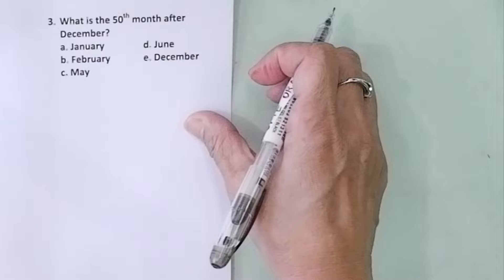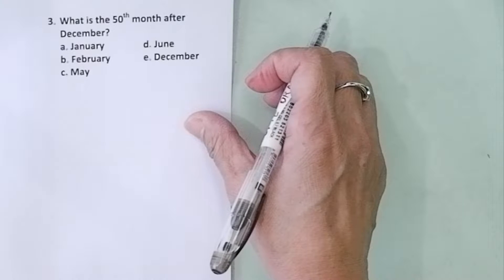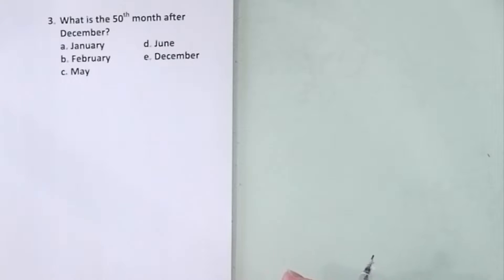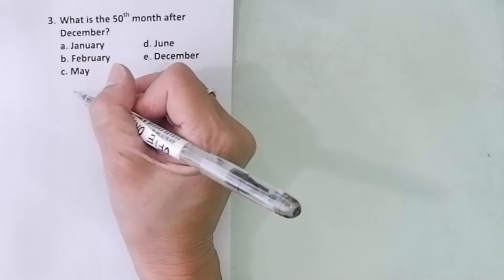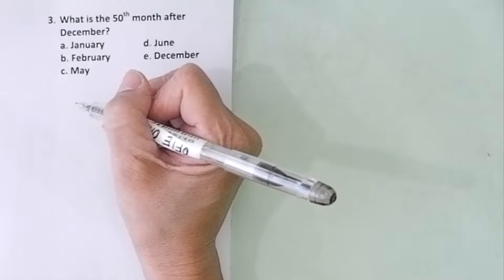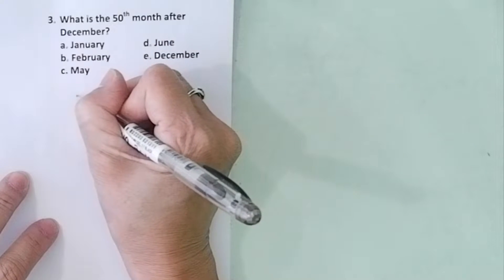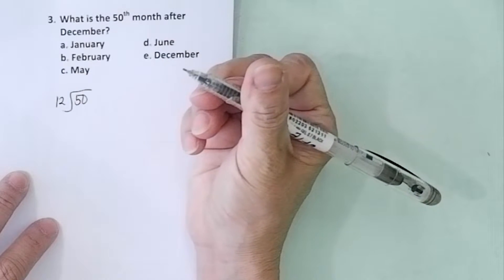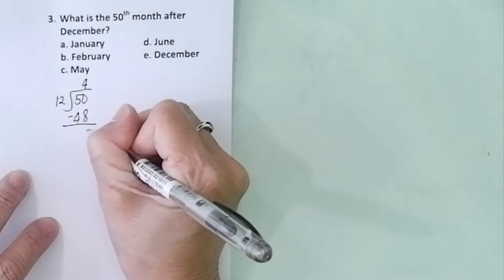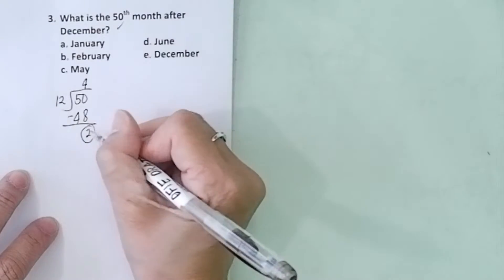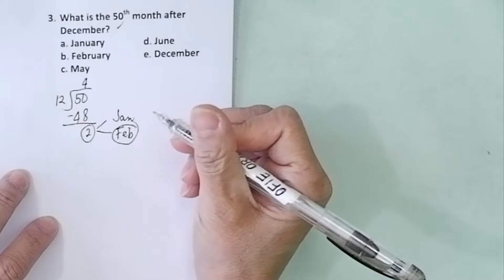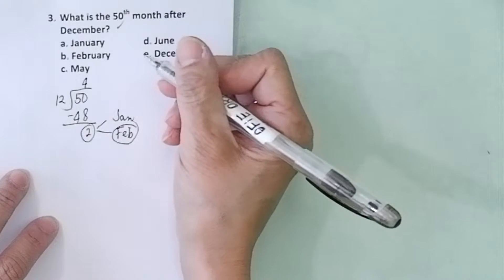Problem number three. What is the 50th month after December? This is a problem on patterns. Don't count 50 times. There's a pattern — you always have 12 months in a year, January through December. So you divide 50 by 12 because there are 12 months in a year. 50 divided by 12 is 4 remainder 2. After December, the next months are January, then February. Remainder 2 counts 1, 2 — so our answer is February.